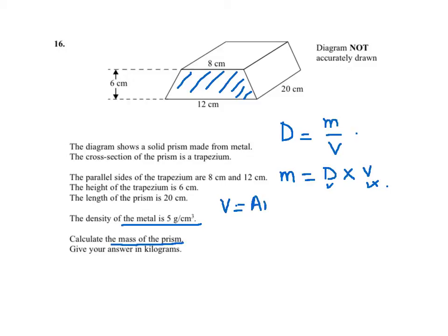So area of cross section, and we times this by the length of the prism, which is 20.